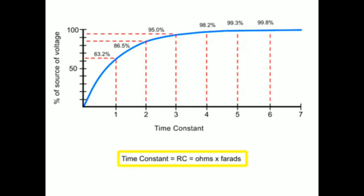A time constant in seconds is equal to the resistance of the circuit in ohms multiplied by the value of the capacitance in farads.